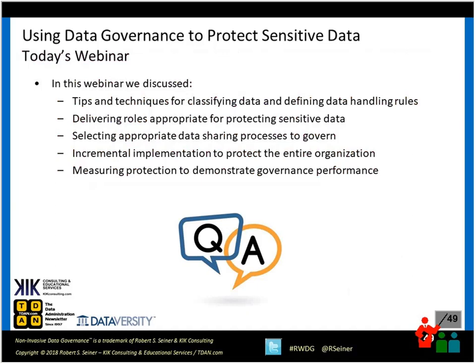In this webinar we discussed five most important things: first, the classification rules and data handling rules; second, the roles and responsibilities associated with data governance as they relate to protecting sensitive data; third, the different data sharing processes and applying governance to them; fourth, incremental implementation — don't boil the ocean, start small and expand; and fifth, measuring protection to demonstrate that data governance is performing its function around protecting sensitive data.